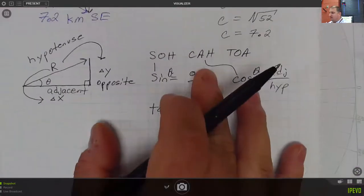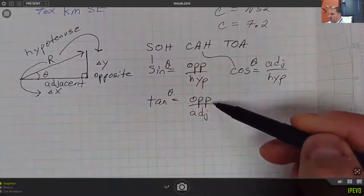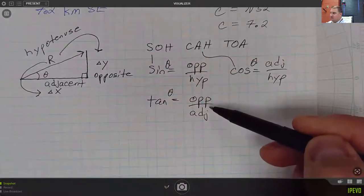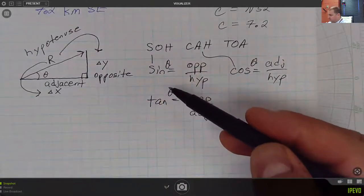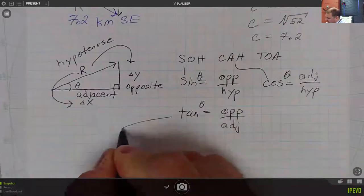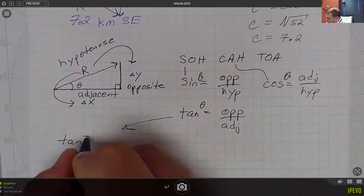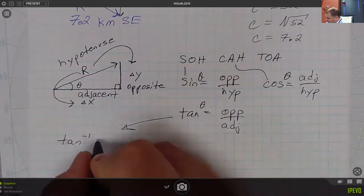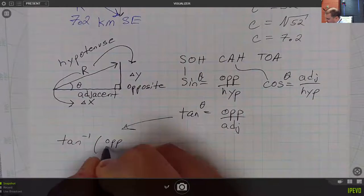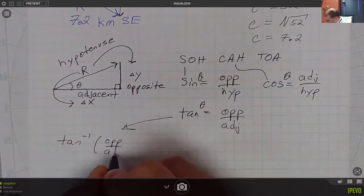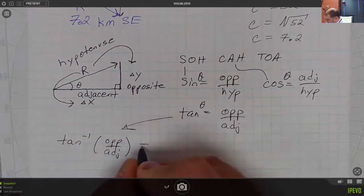We know what those are, and that ratio between them, it doesn't matter what those actual values are, it's the ratio between them that is related to the tangent of the angle. And so, the way you would do this in math class is you would take the inverse tangent of the opposite over the adjacent, and that would give you the angle.